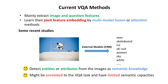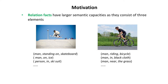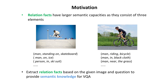However, these concepts or attributes might be unrelated to the VQA task and have limited semantic capacities. By contrast, relation facts have large semantic capacities as they consist of three elements. Therefore, we hope to extract relation facts from the given image and question in order to provide semantic knowledge for VQA.